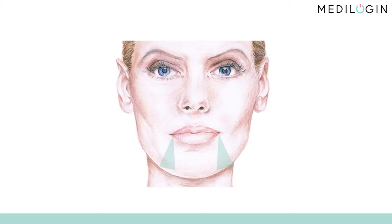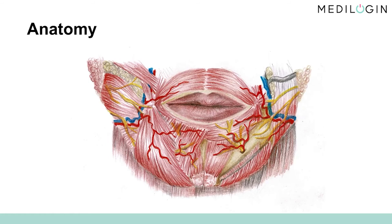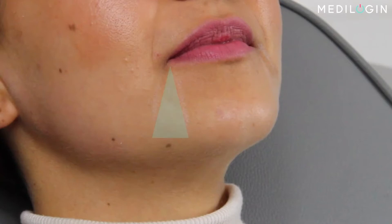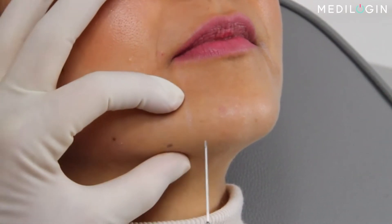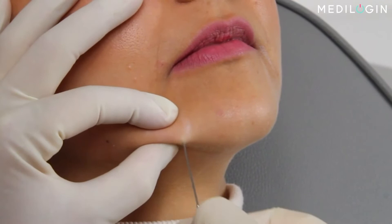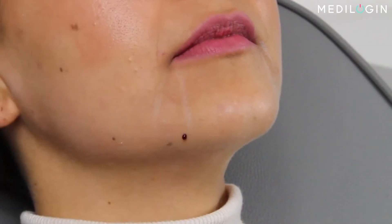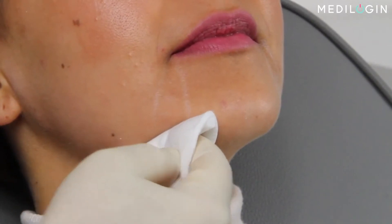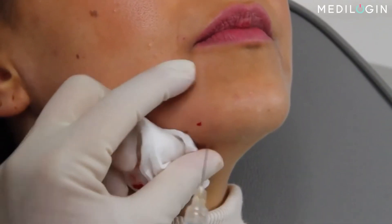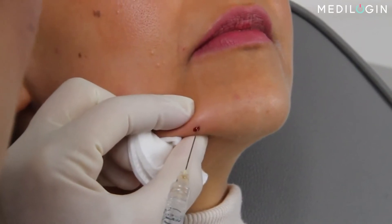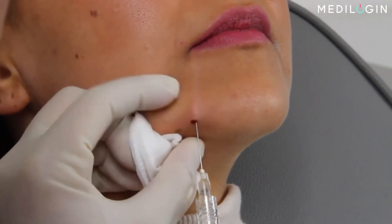In this lesson, we'll cover the treatment of so-called marionette lines using hyaluronic acid. Marionette lines are formed by the tension of various muscles. Starting at the corner of the mouth, draw two lines downward to create a triangle. Carefully disinfect the region with a wipe, and insert a sharp needle into the skin. Then take a blunt needle and carefully insert it along the previously drawn white line. A little resistance is normal.